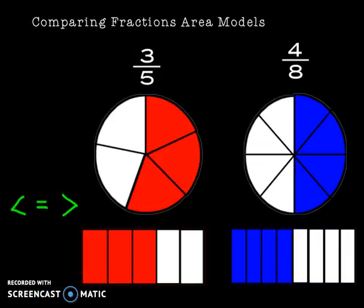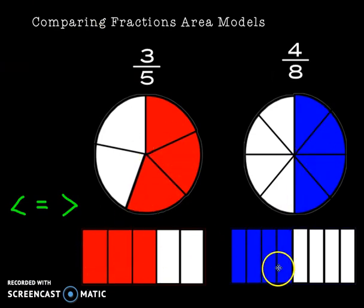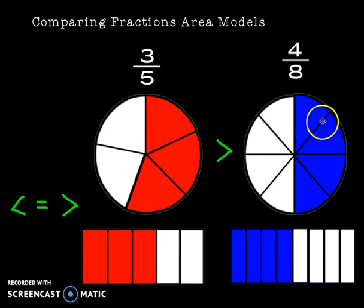Let's take a look at another way. I'm going to use area models. Here's three out of five, and here's four out of eight. So I can see, just by looking at it, that this part here is larger than this part.